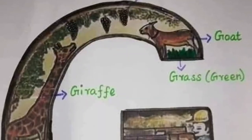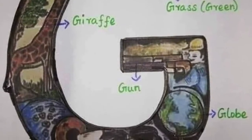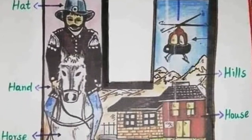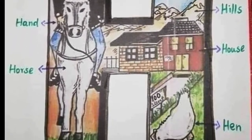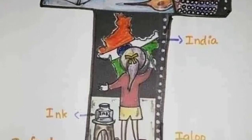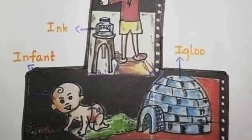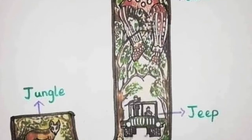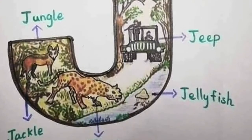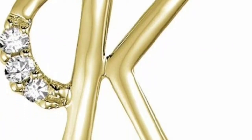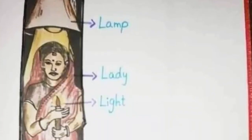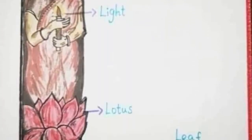G for green, H for head, I for India, J for jungle, K for king, L for lady.